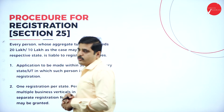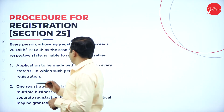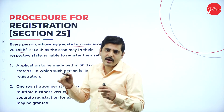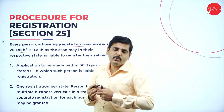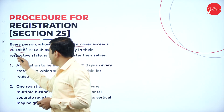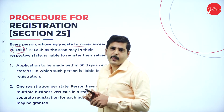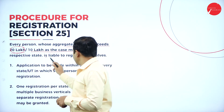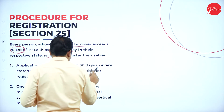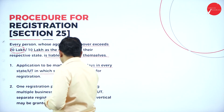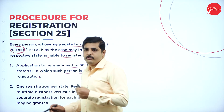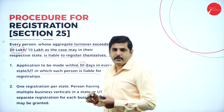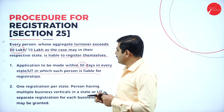Next, the procedure for registration. Every person whose aggregate turnover exceeds 20 lakh rupees must register under GST. Aggregate means the total turnover of all branches including the head office. If it exceeds 20 lakh then you have to register under the GST act. In the case of special category states, 10 lakh rupees is the threshold for liability to register. Application must be made within 30 days, in every state or union territory in which such person is liable for registration.